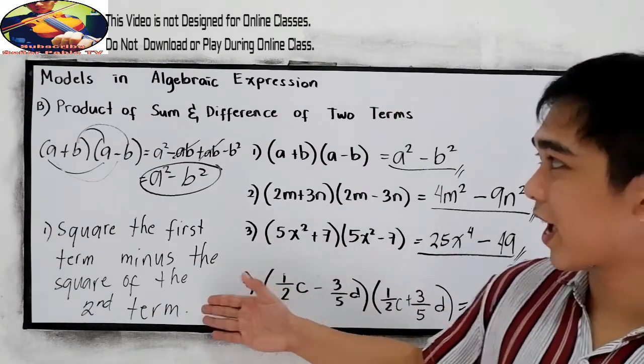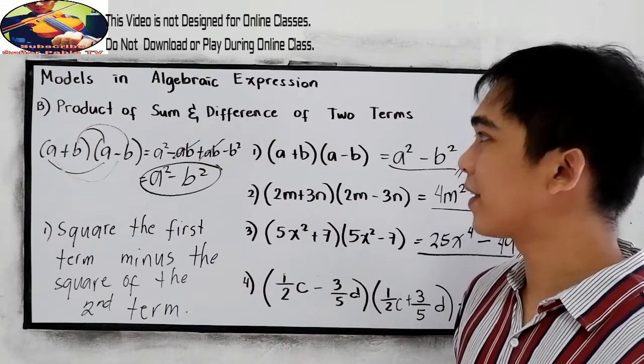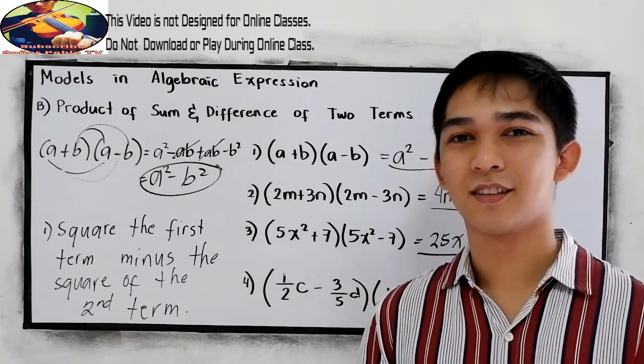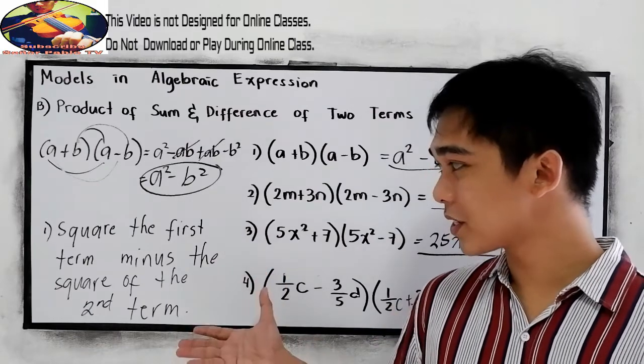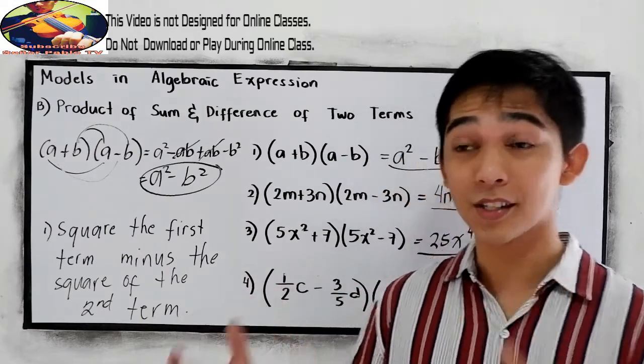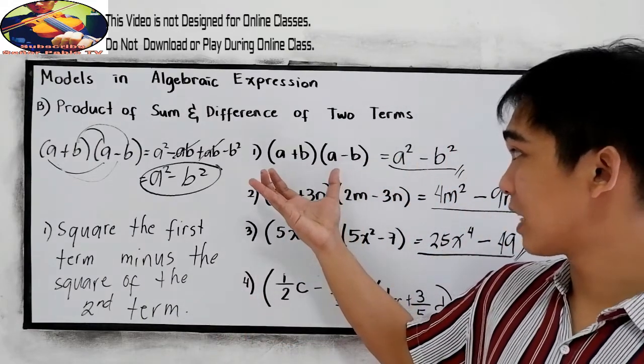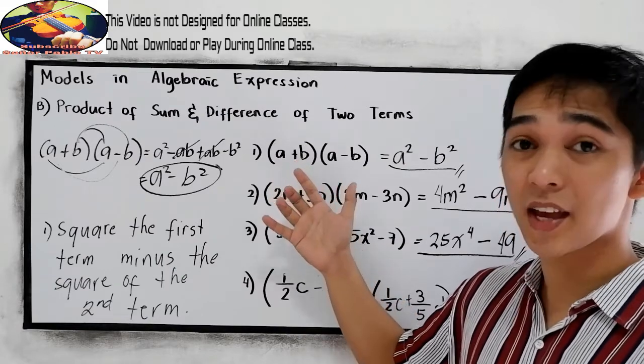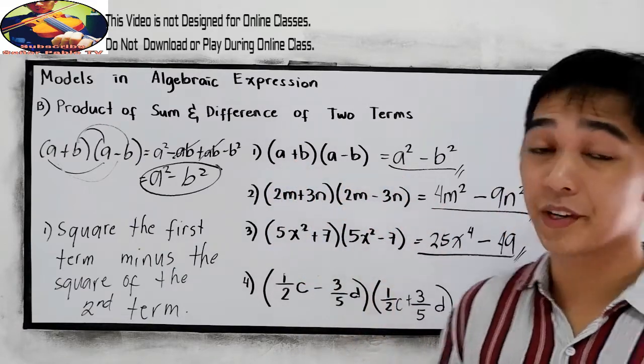So this is the shortcut in finding the product of sum and difference of two terms. The square of the first term minus the square of the second term. So first, we study the given. If the two terms are similar but different in sign, that is the sum and difference of two terms.